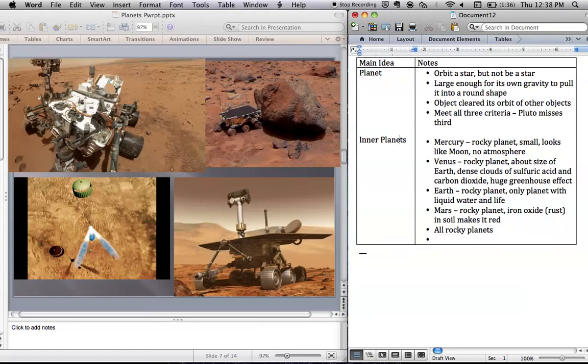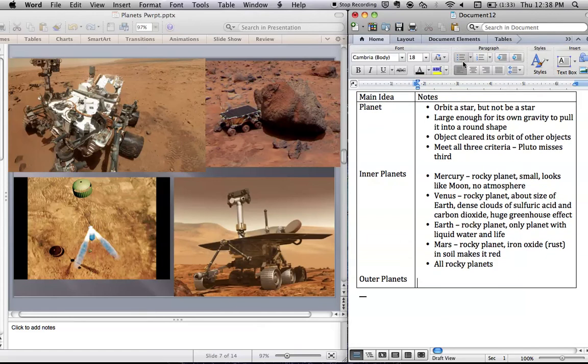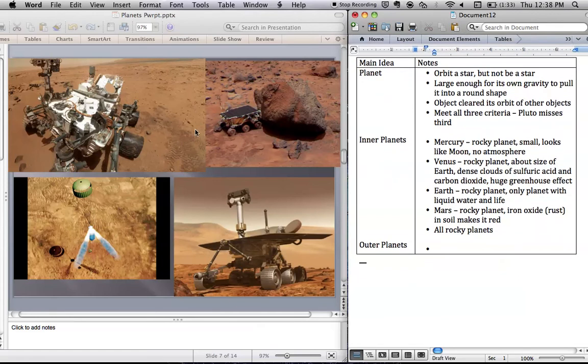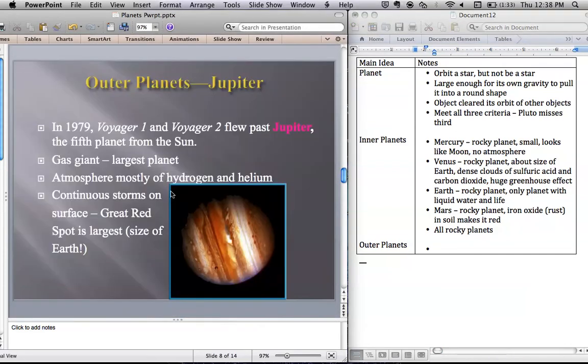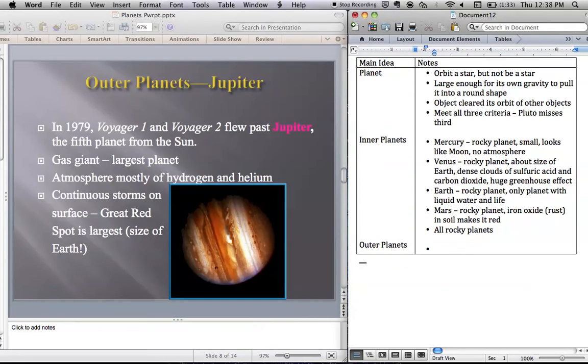So we leave Mars behind and we head out into the outer planets. And so into the outer part of our solar system. We're going to start with Jupiter as the first outer planet. We've sent two space probes past Jupiter. This is a gas, what we call a gas giant.